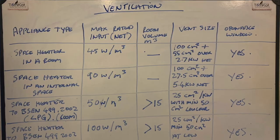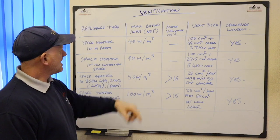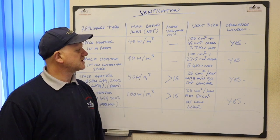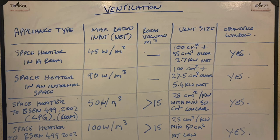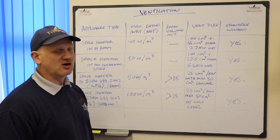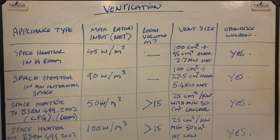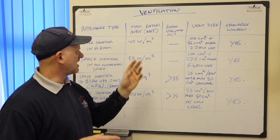For a space heater in a room — a living room or dining room — the maximum rated input in net kilowatts is 45 watts per metres cubed. The room volume column shows a dash because we're working to the 45 watts per metres cubed figure. The vent size required is 100 centimetres squared plus 55 centimetres squared for every kilowatt over 2.7 kilowatts net, plus an openable window.